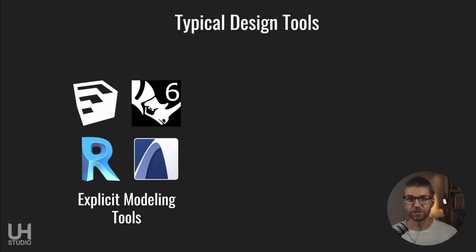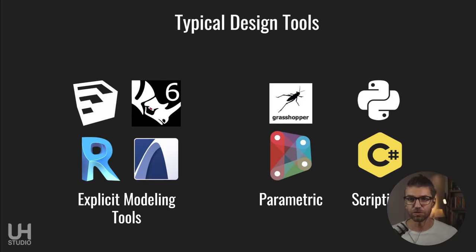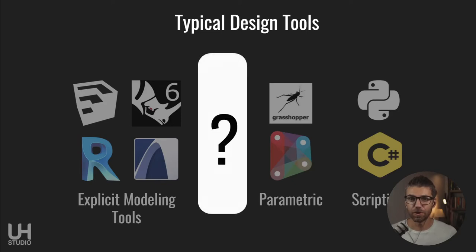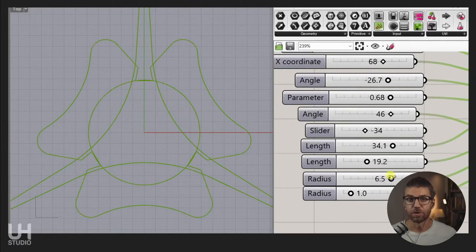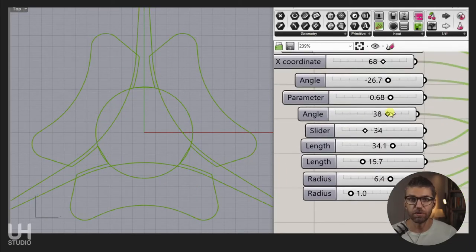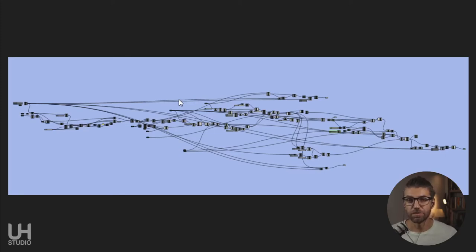We have our typical design tools — Rhino, Revit, ArchiCAD, SketchUp — on one hand, and on the other hand parametric and scripting tools like Grasshopper, Dynamo, C# and Python scripting. What's missing is that intermediate area. I use Rhino and Grasshopper almost daily in my workflow and I know how long it can take to build something. Here's an example — a very simple script for a competition, a circle with three radii — and even for a daily Grasshopper user it takes a while to build.